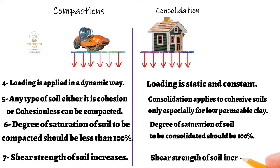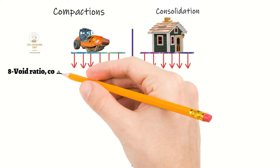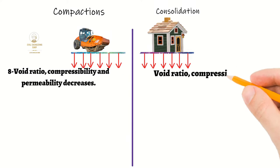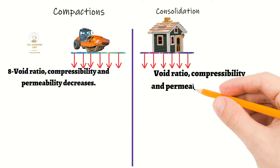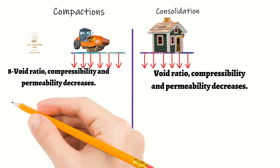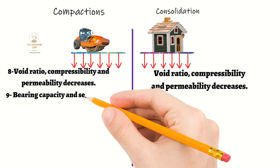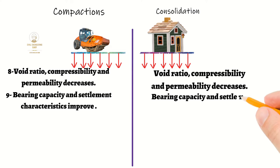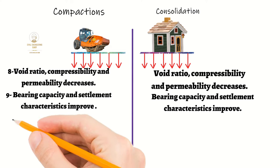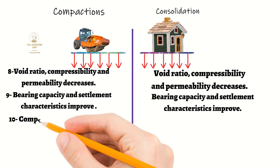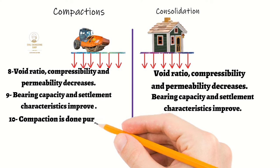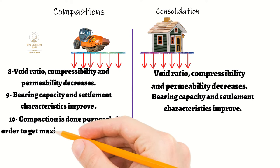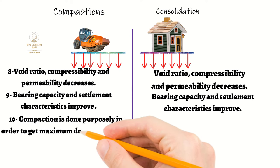Similarly, the shear strength of soil increases in consolidation. Void ratio, compressibility, and permeability decrease in both compaction and consolidation. Bearing capacity and settlement characteristics improve in both compaction and consolidation. Compaction is done properly in order to get the maximum dry density of soil.